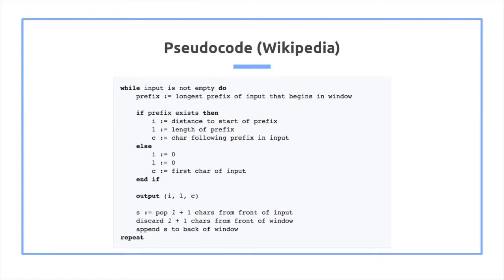Otherwise, we set both I and L to 0. Then we output this, and then we pop L plus 1 chars from the front of the window, and discard L plus 1 chars from the front of the window as well. And lastly, we append S to the back of the window.